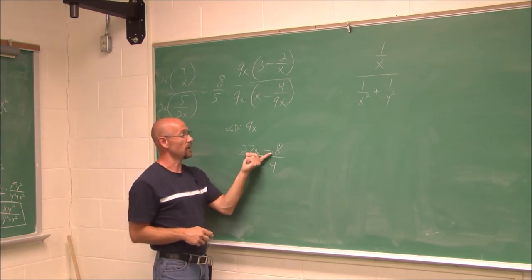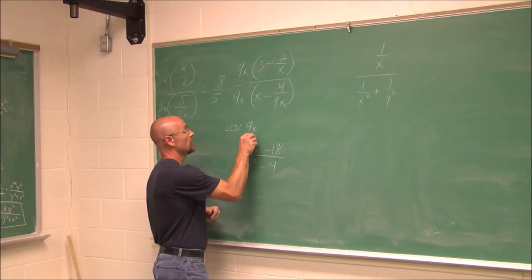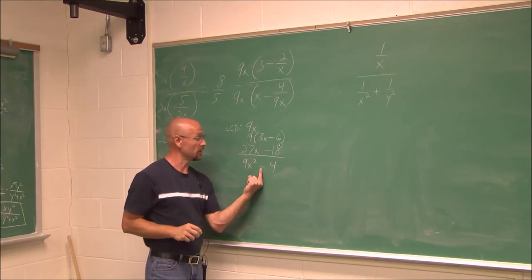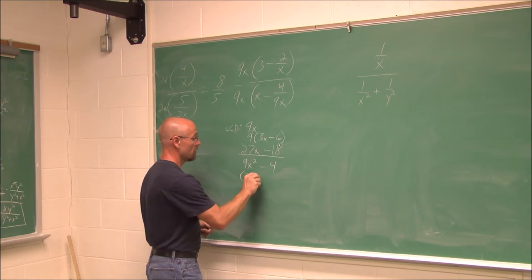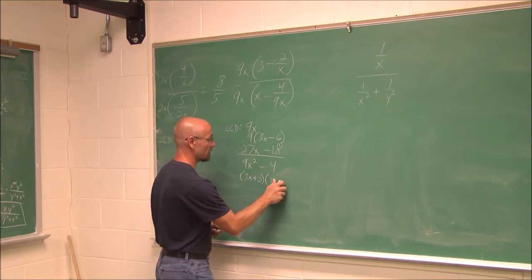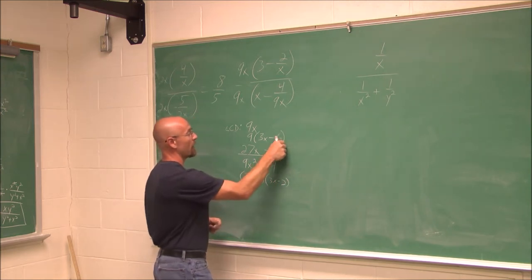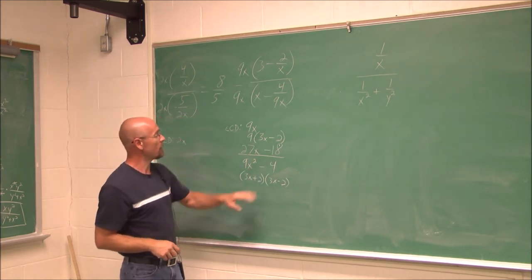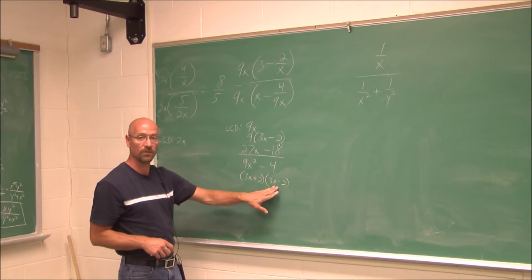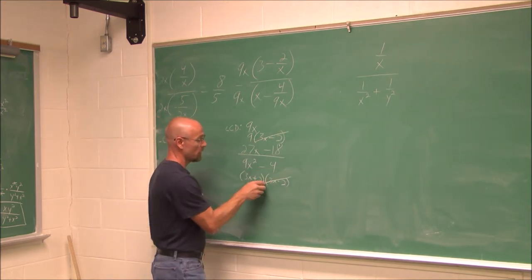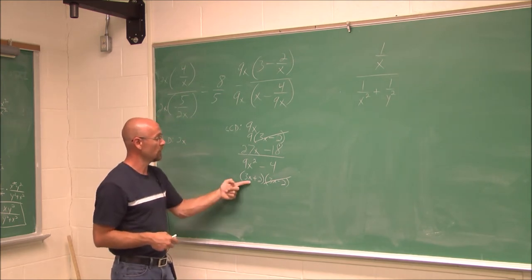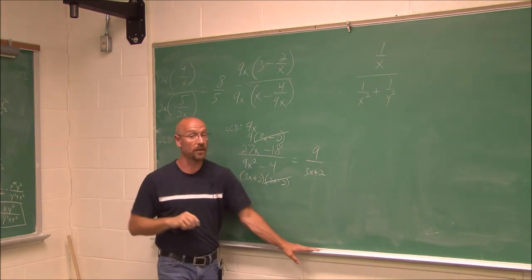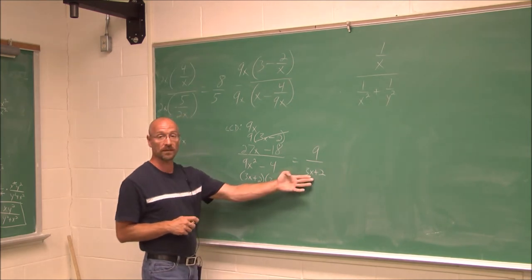Now I reduce if possible. In the numerator, 27x minus 18 — both have a common factor of 9, so I factor that out and get 9(3x minus 2). In the denominator, 9x² minus 4 is a difference of squares, factoring to (3x plus 2)(3x minus 2). The factor (3x minus 2) cancels in numerator and denominator, leaving 9 over (3x plus 2) — exactly what we got with method 1.